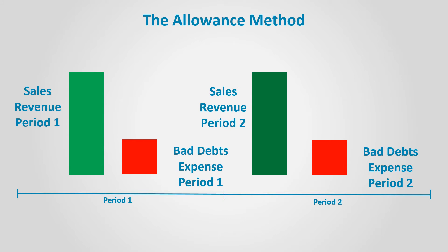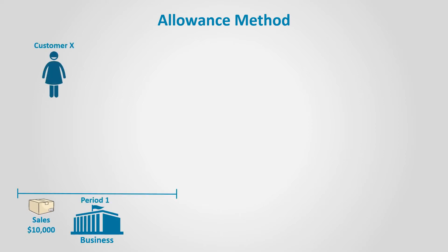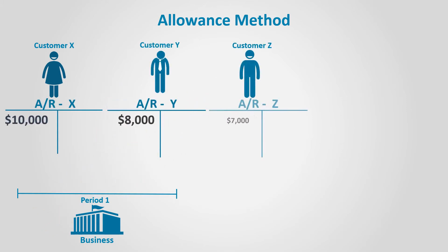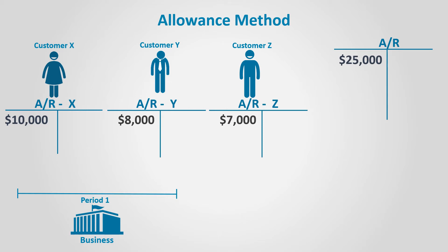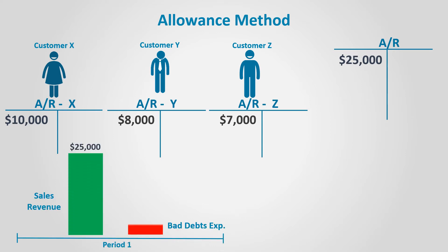As illustrated in the estimation of bad debts expense video, the amount of bad debts expense could be reasonably estimated. Assume a company made credit sales for $25,000 to three customers: Customer X $10,000, Customer Y $8,000, and Customer Z $7,000. The total accounts receivable control account shows a debit balance of $25,000. The bad debts expense is estimated to be $1,500. We need to record such an expense in the same period — if $25,000 is the total sales, we need to deduct $1,500 as bad debts expense during the period, because it is related to the sales in this period.